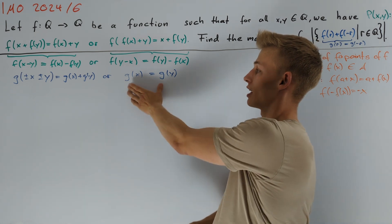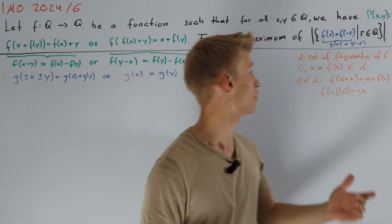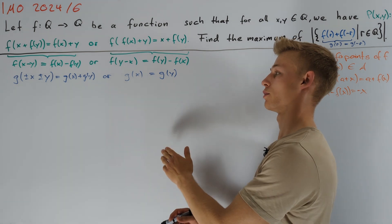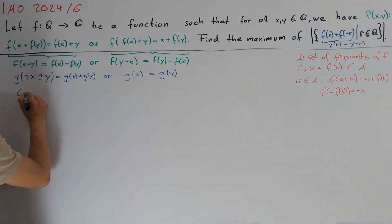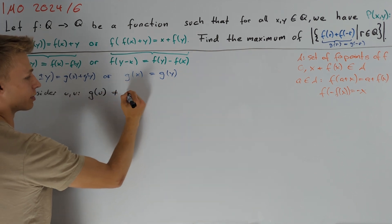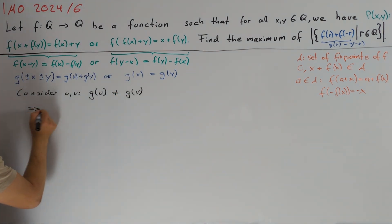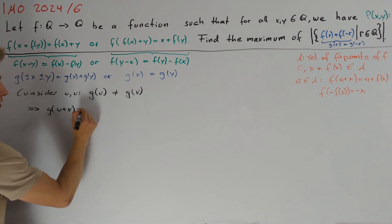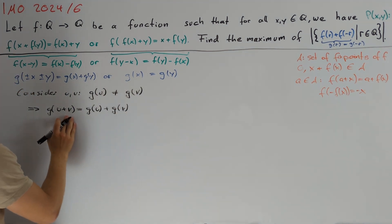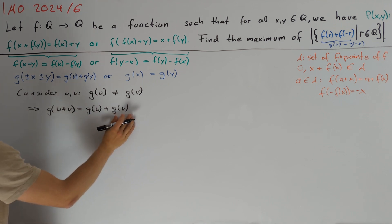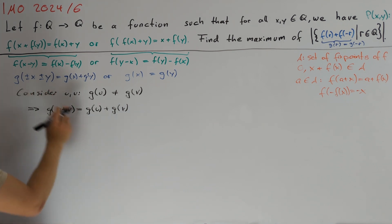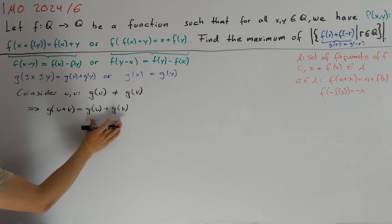Let's bring this statement to the top of the blackboard and see if it gives us an upper bound on the number of values g can attain. If we are only ever in the right case, then g must be a constant function and the number of values would be 1. So let's figure out what happens if we find x and y such that we are not in the right case — consider u and v such that g(u) ≠ g(v). We get g(u+v) = g(u) + g(v). It would be even better if g(u+v) is not equal to either summand on the right.